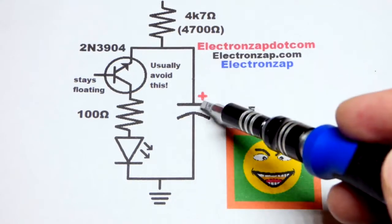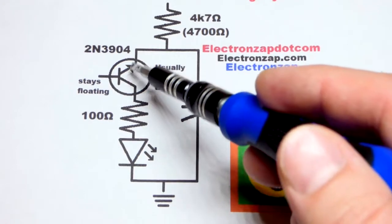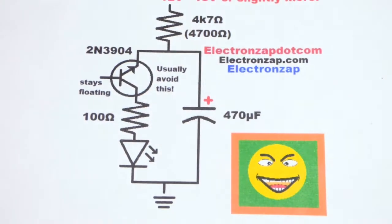And so the capacitor will charge up a bit and then make it conduct. That will drop the voltage. It will stop conducting and the capacitor can start charging again.